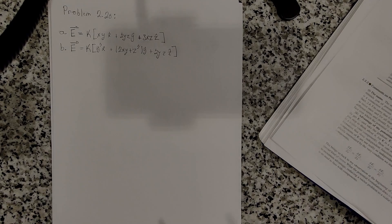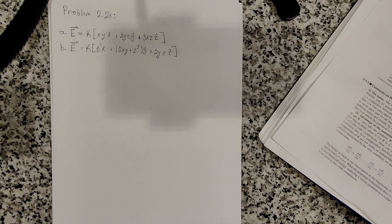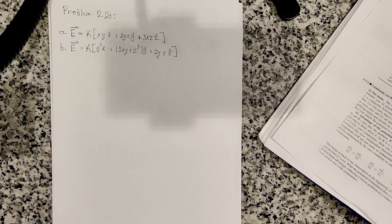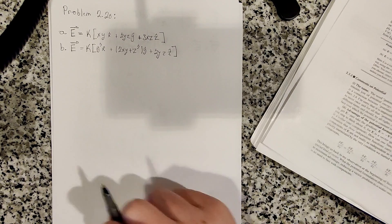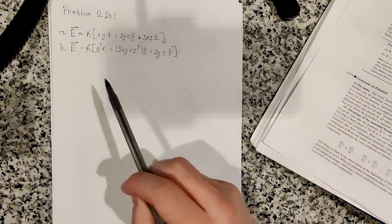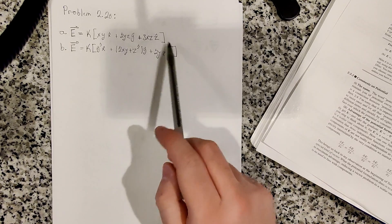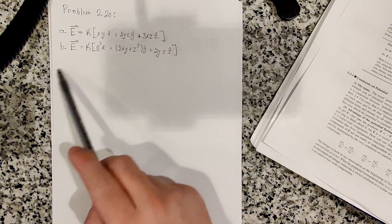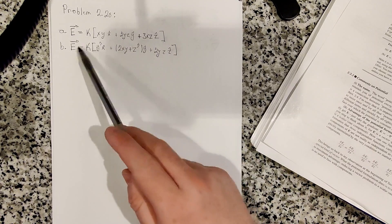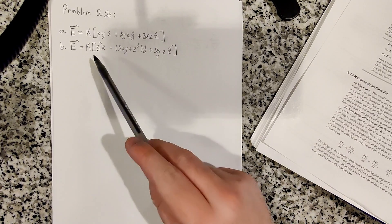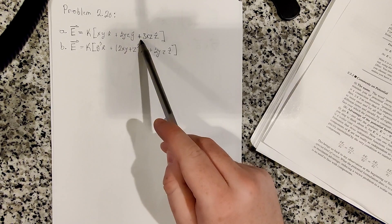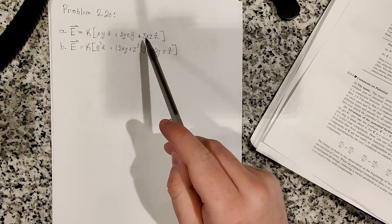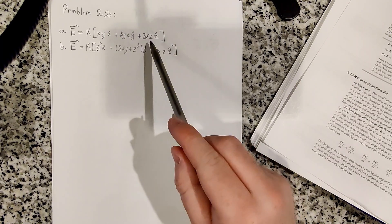Hello, everyone. Welcome to problem 2.20 of David Griffith's Electrodynamics. This problem states that we have two electric fields described by two equations, A and B. One of them is an impossible electrostatic field, and it asks us to find which one.